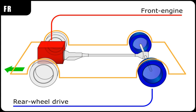Front-wheel drive layouts: Front-engine, front-wheel drive. The front-engine, front-wheel drive layout places both the internal combustion engine and driven wheels at the front of the vehicle. This is the most common layout for cars since the late 20th century.